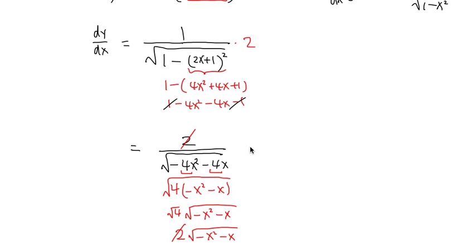Altogether, this is equal to, I have 1 on the numerator. Over, the bottom is going to be square root of the negative x squared minus x. This is the answer.